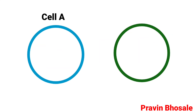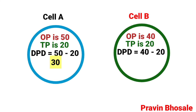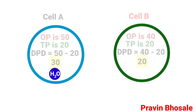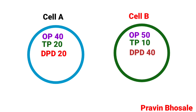Example: Cell A has osmotic pressure 50, turgor pressure 20, so DPD = 30. Cell B has osmotic pressure 40, turgor pressure 20, so DPD = 20. Water moves from lower DPD to higher DPD — from Cell B (DPD 20) to Cell A (DPD 30). Another example: Cell A osmotic pressure 40, turgor pressure 20, DPD = 20; Cell B DPD = 40. Water moves from Cell A to Cell B.